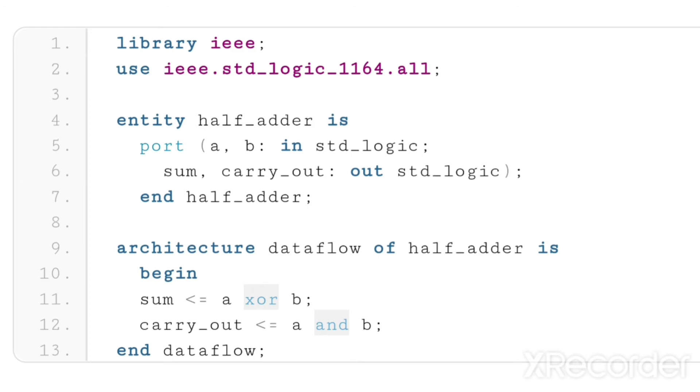We need to end the entity block with the entity name. The entity name is half_adder, so I'm ending that entity block after the port declaration as end half_adder. Similarly, the architecture name is dataflow, so I'm ending that as end dataflow.